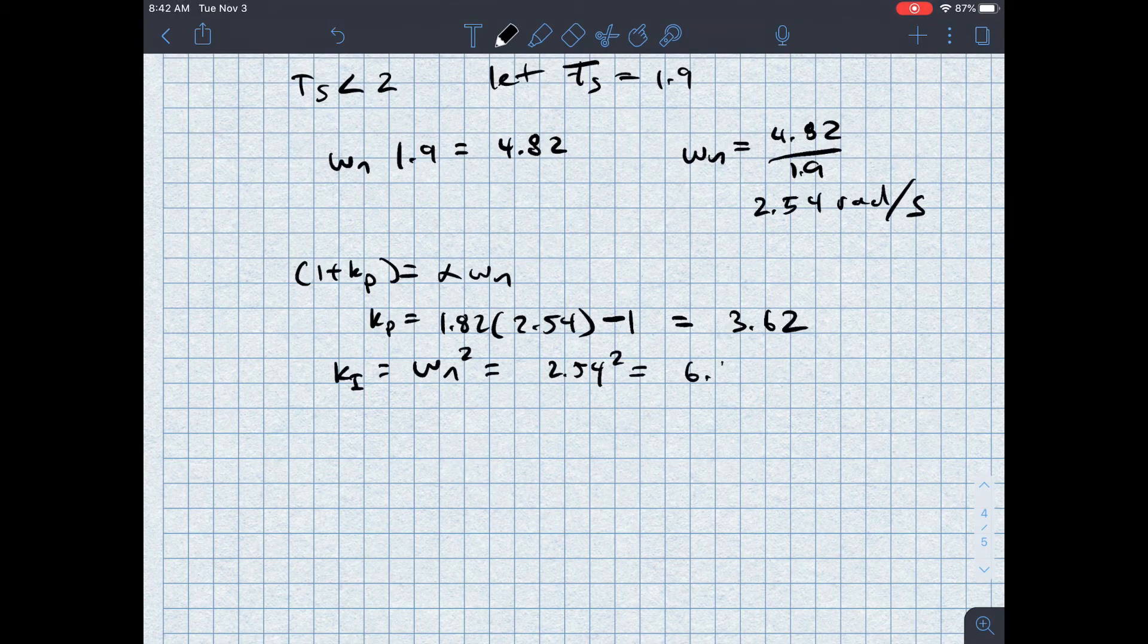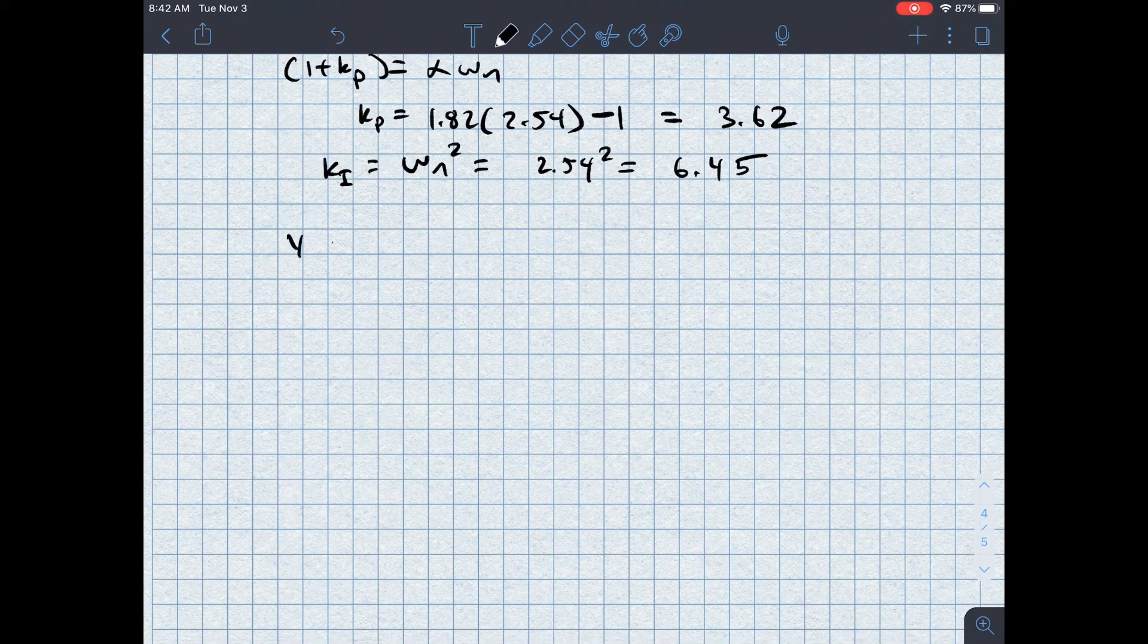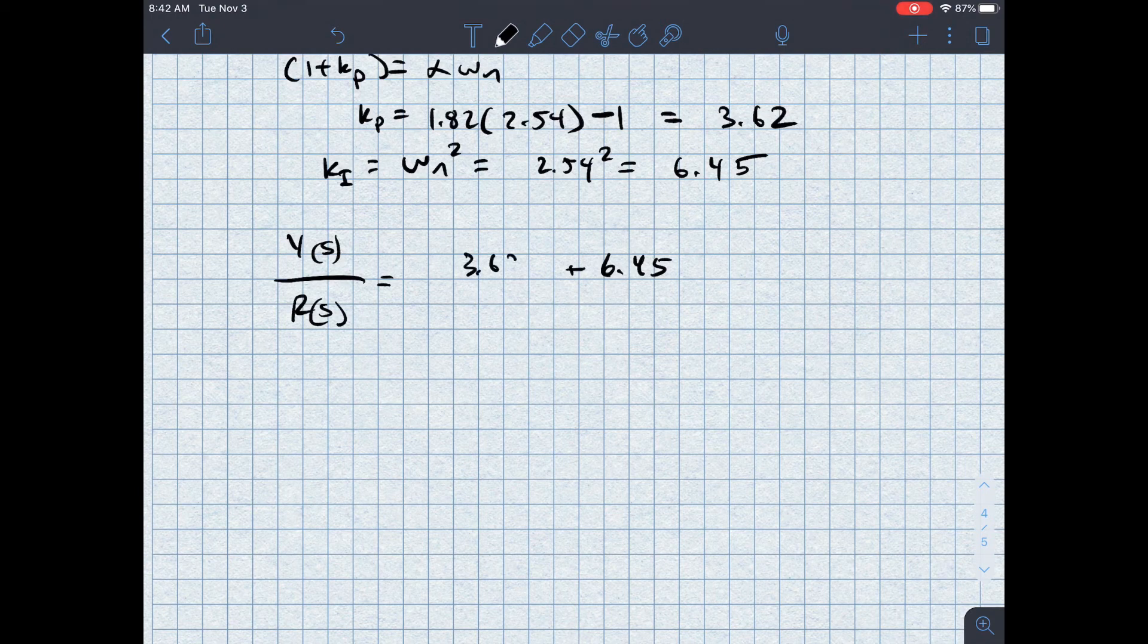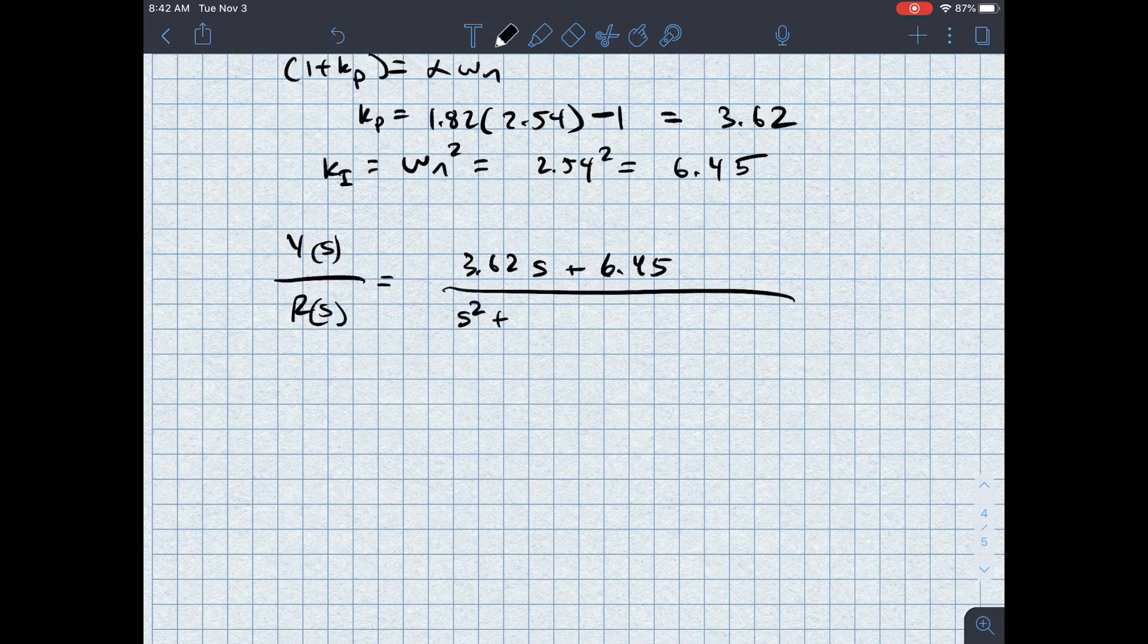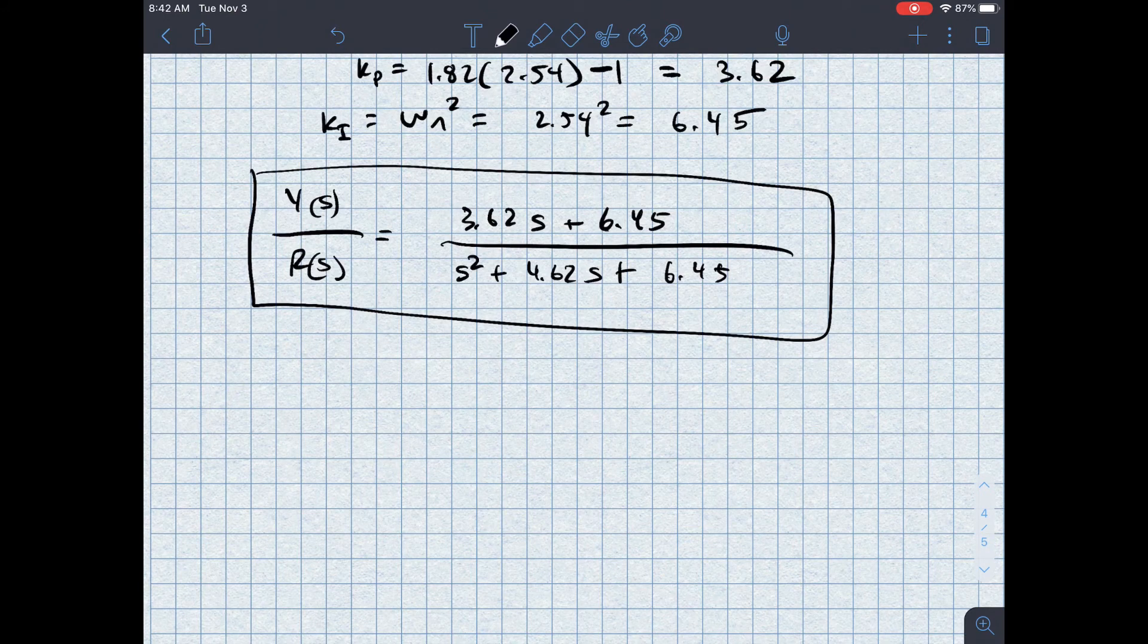So if I go back to my transfer function and plug those things in, I know that KI is 6.45. I also know that KP is 3.62, and then I've got S there, and then I've got S squared plus, and then this is 1 plus KP. So 4.62 S plus 6.45. Am I done at this point? Absolutely not.